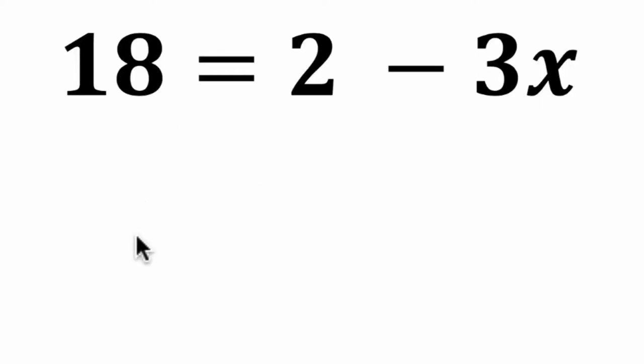All right, so this problem tells us that 18 is equivalent to 2 minus 3x. So these are the same thing. 18 is the same thing as 2 minus something, minus 3x.